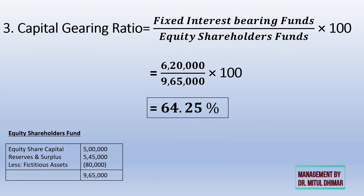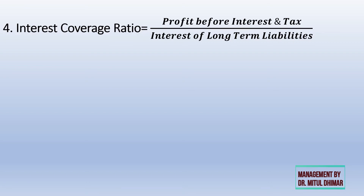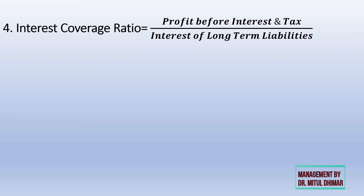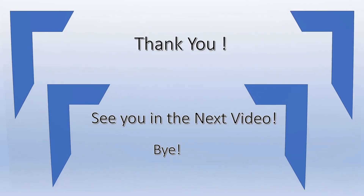The last is interest coverage ratio. This ratio indicates the ability of a company to pay off its interest on long-term debt. The formula is profit before interest and tax divided by interest on long-term liabilities. Checking the income statement, profit before interest and tax is 10 lakh rupees, and interest on debentures (the only long-term debt) is 20,000. So the formula gives 10,00,000 divided by 20,000 — that is 50 times. This means the company makes a profit 50 times greater than the interest paid.